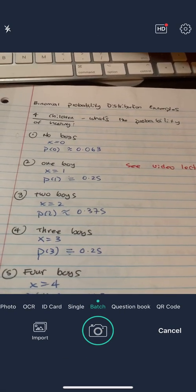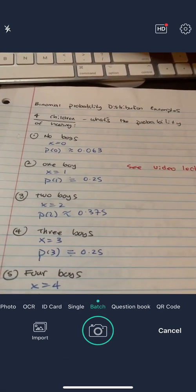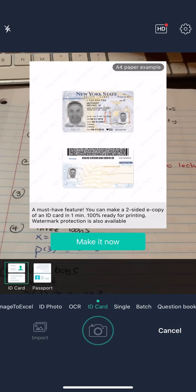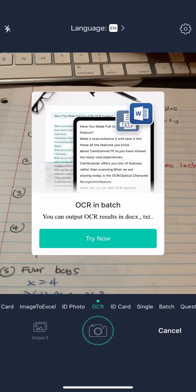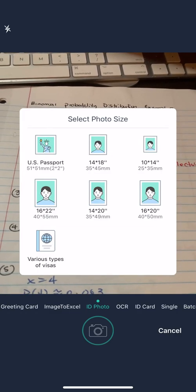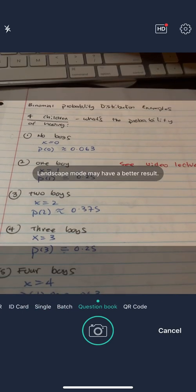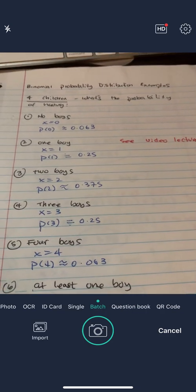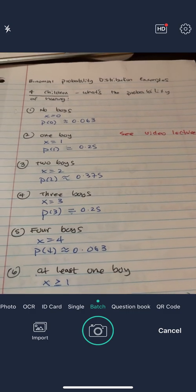Now make sure it's in batch, and you can see the batch in blue highlighted here. Single, ID card, OCR, ID photo, we don't want any of those. Question book, I need a batch because a batch means I'm going to upload more than one.